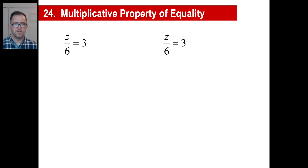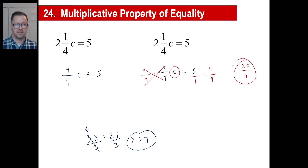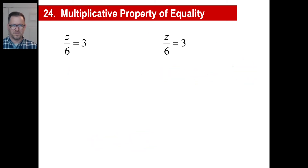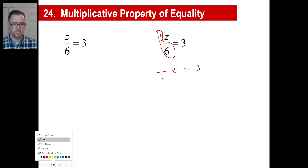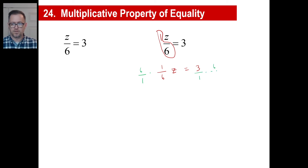Here's z over 6 equals 2. This is a little different — the z is on top of the fraction. If you don't see a number by the z, just assume it's a 1. You can treat this as a fraction, so I would write this as one-sixth z equals 3. Now multiply both sides by the reciprocal — 6 over 1. These cancel, that gives us just z. 3 times 6 is 18, divided by 1 is just 18. Done.